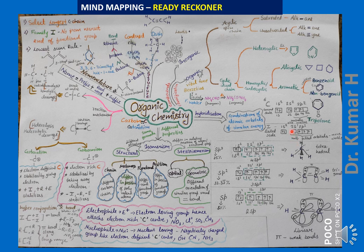The four sp³ hybrid orbitals — sp³1, sp³2, sp³3, sp³4 — are formed, and these four hybrid orbitals are responsible for the tetravalency of carbon. This is sp³ hybridization.